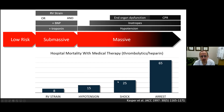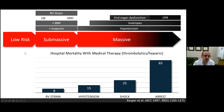Once patients progress to end organ dysfunction requiring inotropes, in-hospital mortality rises to about 25 percent. Once patients have required CPR at some stage, mortality increases significantly to at least 65 percent — these numbers vary depending on the paper. Patients in the submassive category have a large pulmonary embolus but have not developed hypotension.